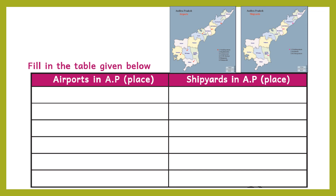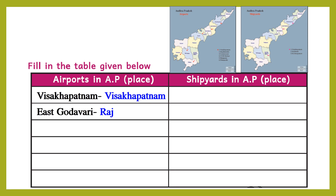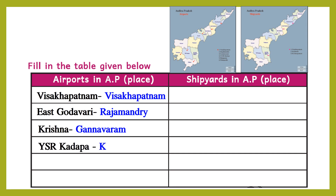Now, fill in the table given below: which are the airports in AP and which are the shipyards in AP. For airports in AP: Visakhapatnam is in Visakhapatnam district; East Godavari district has Rajamahendravaram airport; Krishna district has Gannavaram airport; Kadapa is in Y.S.R. Kadapa district; and Renigunta in Chittoor district — Renigunta airport is also known as Tirupati airport.